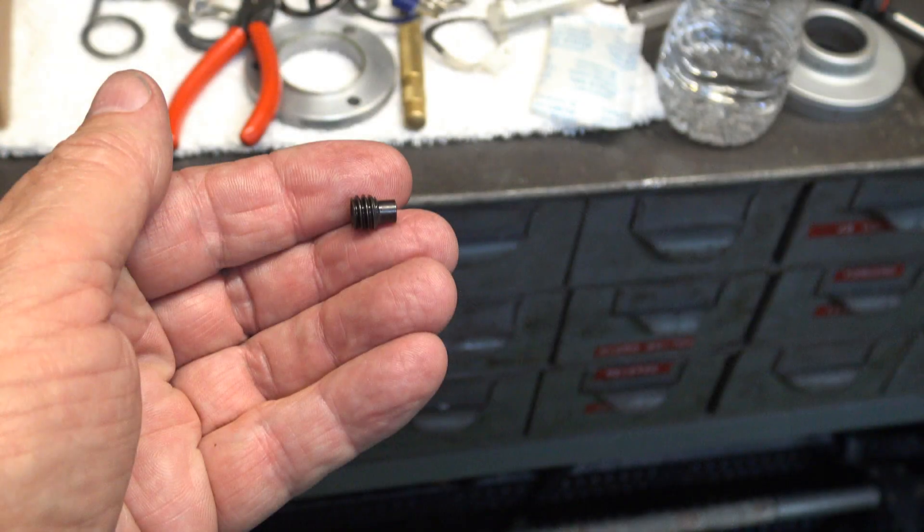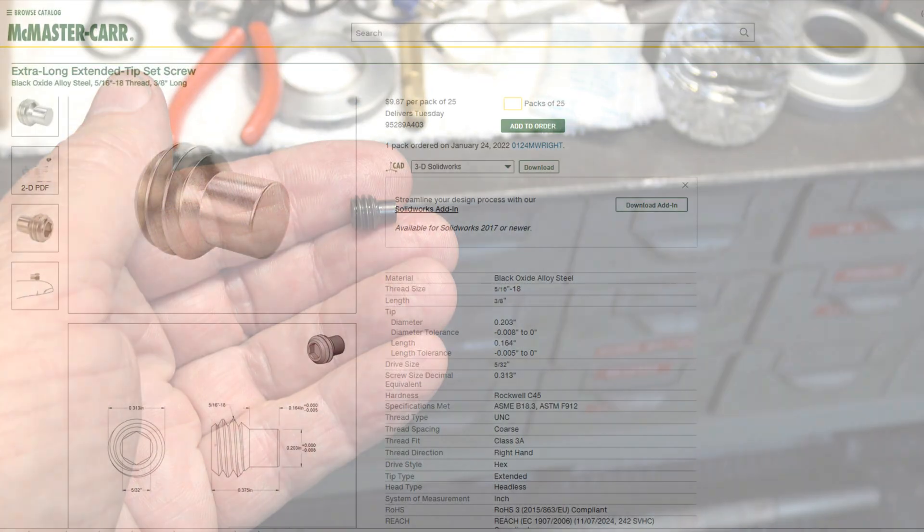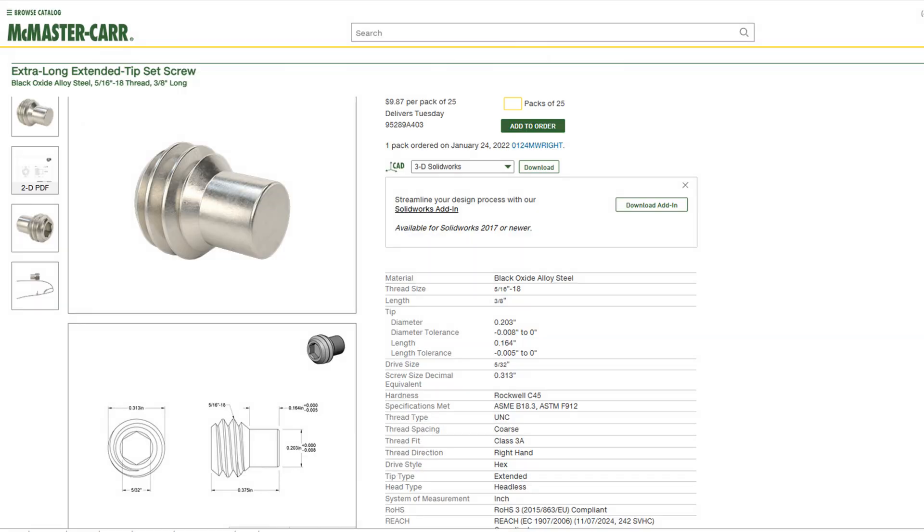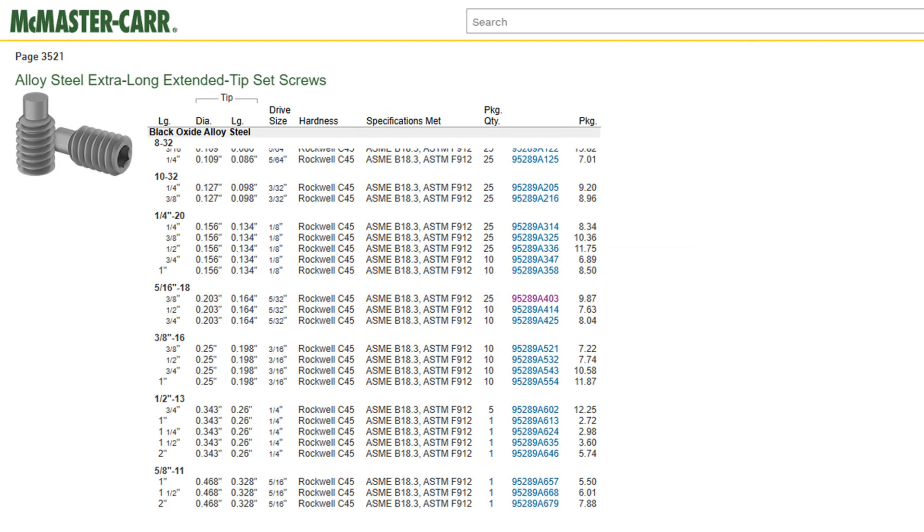It's not just a standard set screw. It's called an extra-long extended tip set screw. I lucked out and just happened to have this one on hand. You can order them from McMaster-Carr. They have a whole variety of different sizes, but I'll put a link in my description for the size that I used.